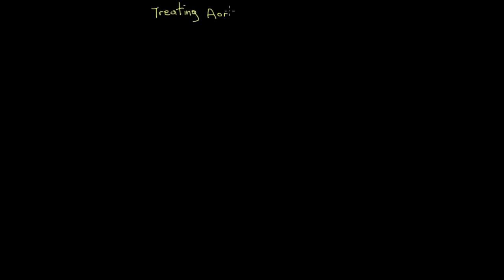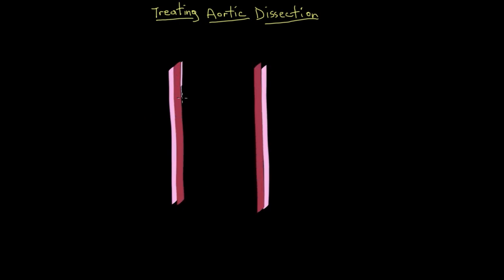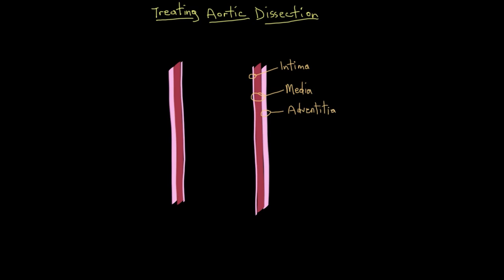How do you manage an aortic dissection? How do you treat one? To remind you, an aortic dissection is when you develop a tear between your intima and your media in your aortic wall. When you develop a tear, blood will start to get in there and start to tear the layers away from each other. This is a medical emergency and requires immediate treatment at a hospital.